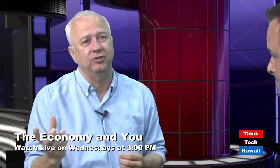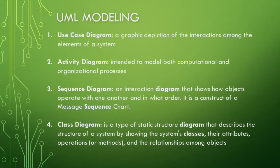One of the things we use to help map ideas is called UML modeling. We use things like use case diagrams, which are basically a graphical depiction of interactions among the elements of a system. A user is sort of an actor — you build a use case scenario and talk about the things the user is going to do with the application. These tools help you define your ideas and communicate them with your developers.